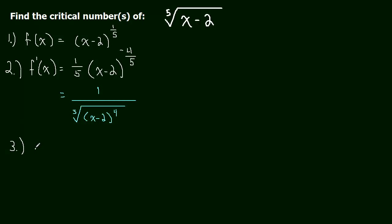So when is this denominator zero? Well, it's when x equals 2, right? If you plug 2 in for x, this will be 2 minus 2, which is zero, to the fourth, which is zero. The fifth root of zero is zero, and you'll get 1 over zero. So when x is 2, we get 1 over zero in the derivative. That does not exist.